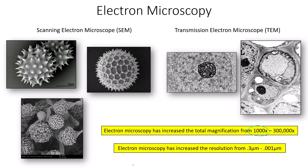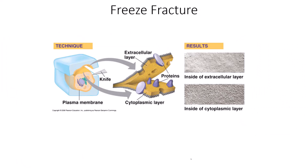Electron microscopy has also increased resolution from 0.3 micrometers to 0.001 micrometers. We can zoom in and actually resolve between two really closely related objects to 0.001 micrometers — substantially better.